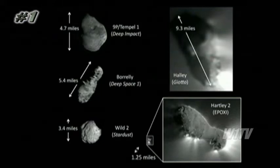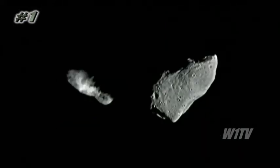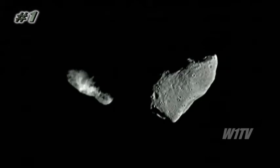When you look at the shapes of these, they look rather similar to another class of objects. On the left is comet Borley, and on the right is Gaspra, an asteroid. So in shape, at least, comets look a lot like asteroids — which, of course, begs the question: what's the difference between a comet nucleus and an asteroid?